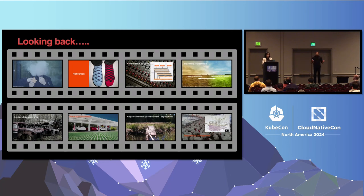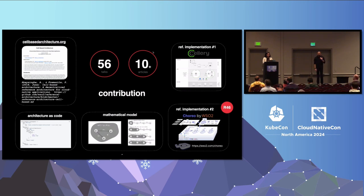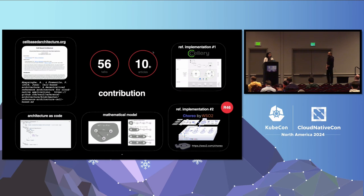Last but not least, the 'death star diagram' — when microservices came into the picture, people started putting thousands of microservices and you couldn't find dependencies or ownership. That's how all this started. The idea came from biology and microbiology, cultivated through first-principles thinking. We released the specification at cell-basedarchitecture.org — myself and my mentor Paul Fremantle, our founding CTO, authored it. I've since spoken at over 56 conferences on this topic, introduced architecture-as-code, a mathematical model for identifying cell boundaries, and two reference implementations: Selly and Choreo.